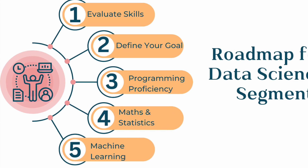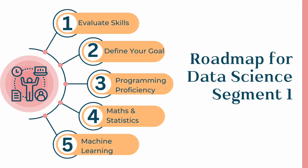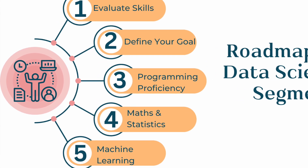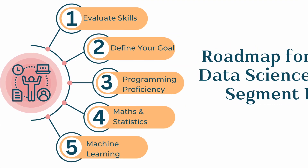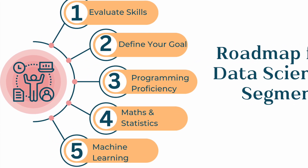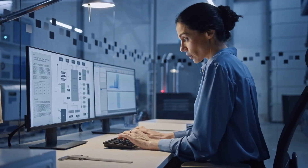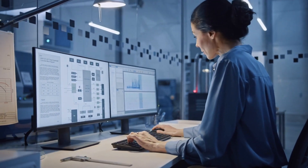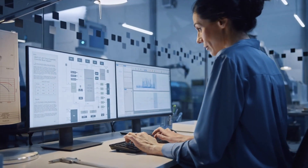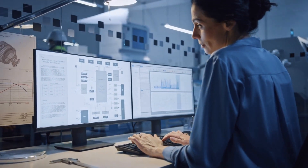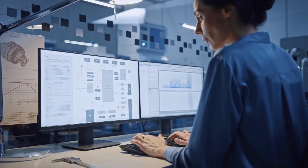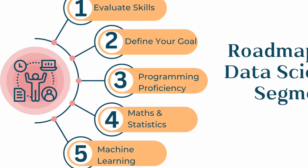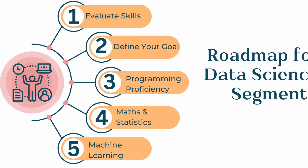Now let's discuss the roadmap for preparing for data science positions. Step one: evaluate your skills — take stock of your strengths and areas that need improvement, whether in programming, statistics, or domain knowledge in machine learning or AI. Step two: define your goal — decide on the specific data science role you are aiming for, whether it's data engineer, data scientist, or data analyst.